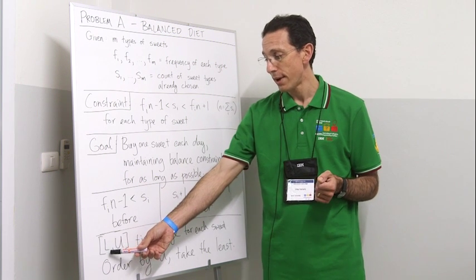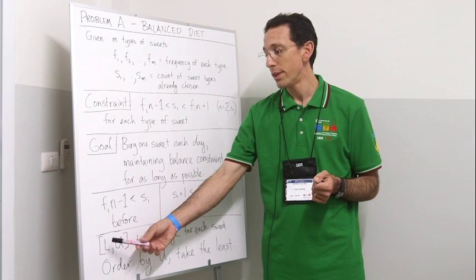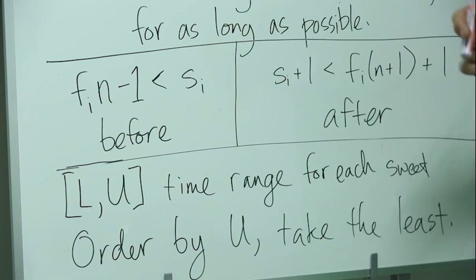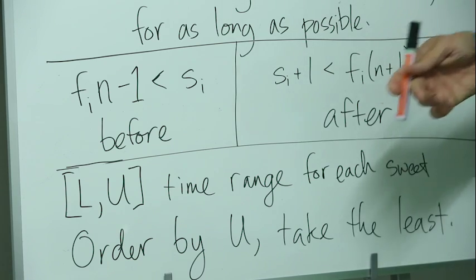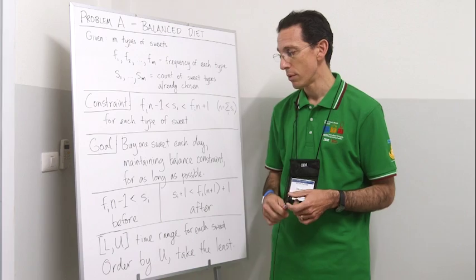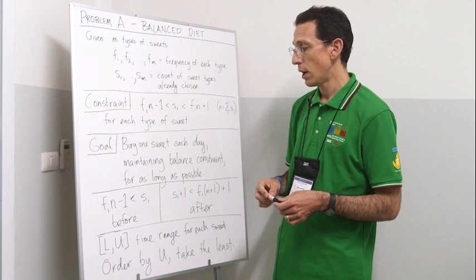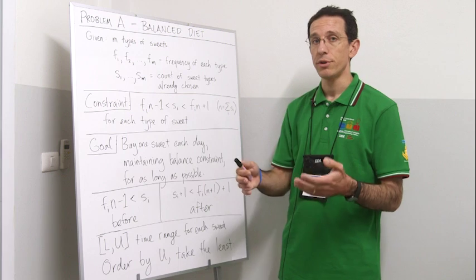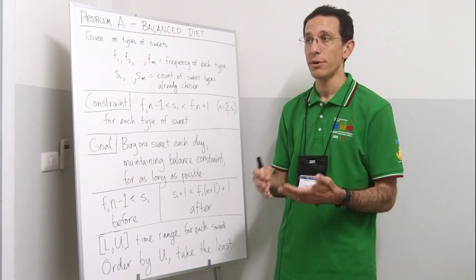For those sweets which are currently available, we'll put those in a priority queue ordered by upper bound, with increasing upper bound, so that we always want to choose the sweet whose upper bound is coming up first.